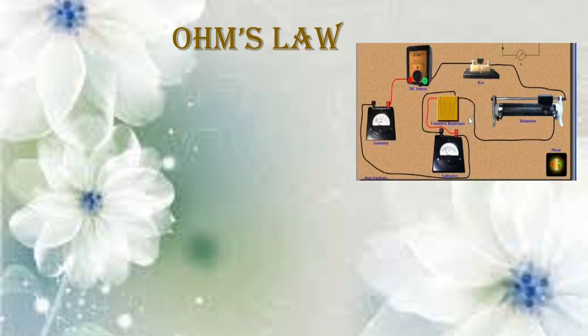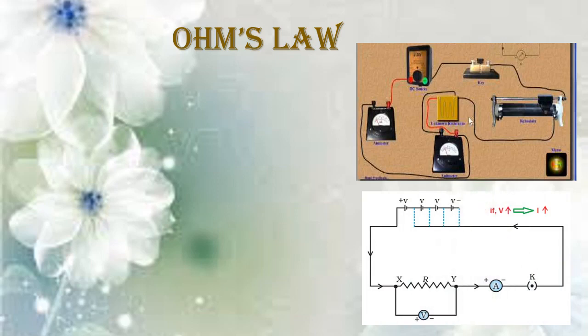So all these you must have seen, and when connected you have the circuit diagram which you can see right now. In the circuit diagram you can see there are four cells being connected and there is a dotted line, indicating that not all four cells are connected at the beginning. First you connect only one cell to the circuit and find out the voltmeter reading and the ammeter reading.